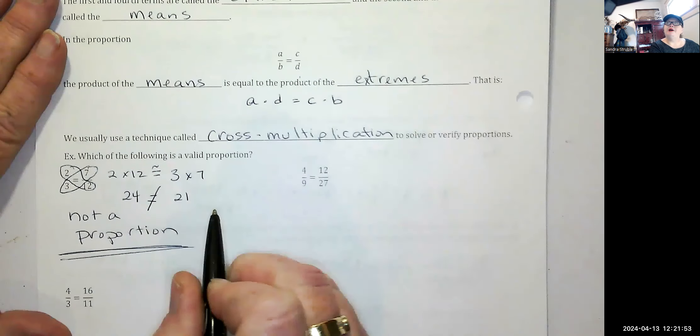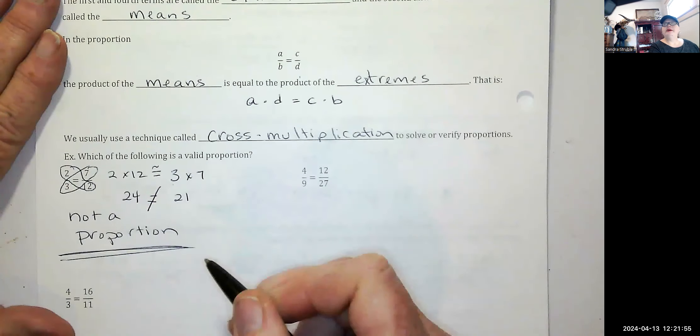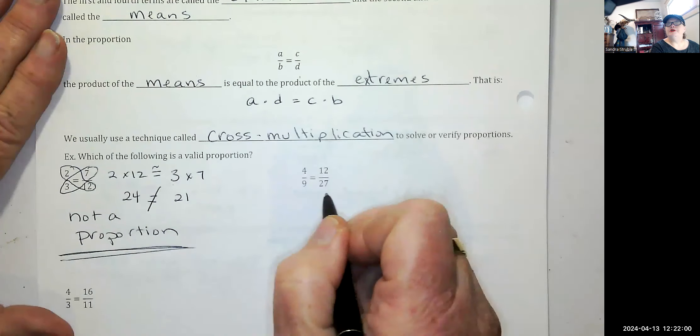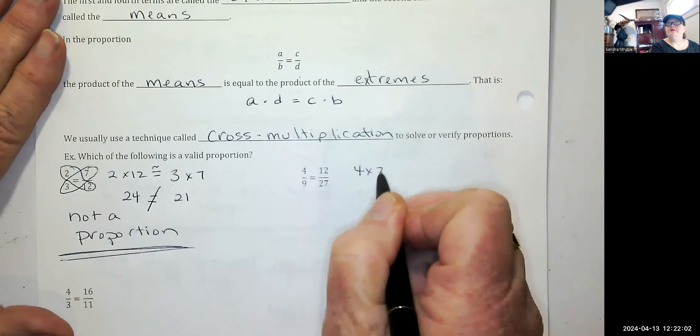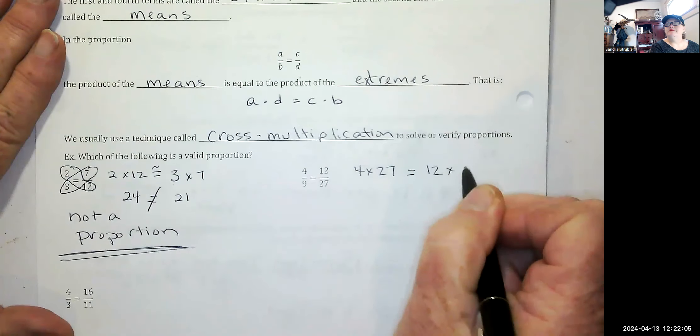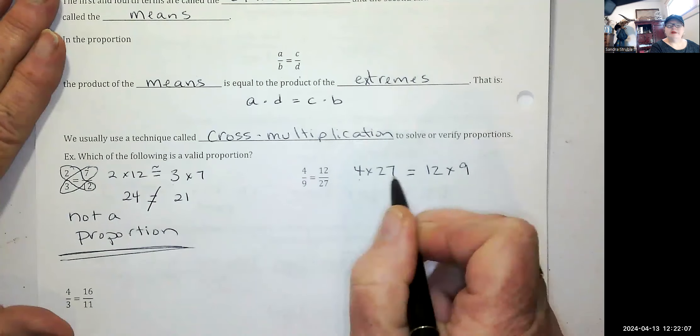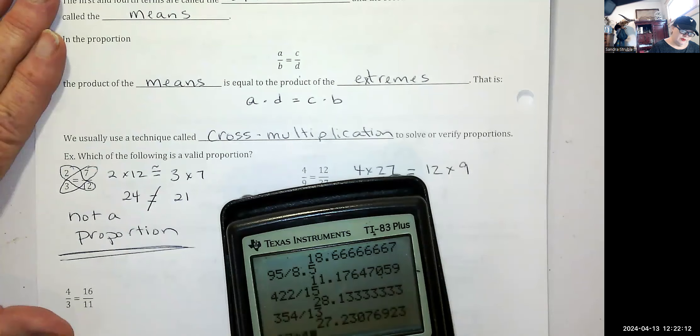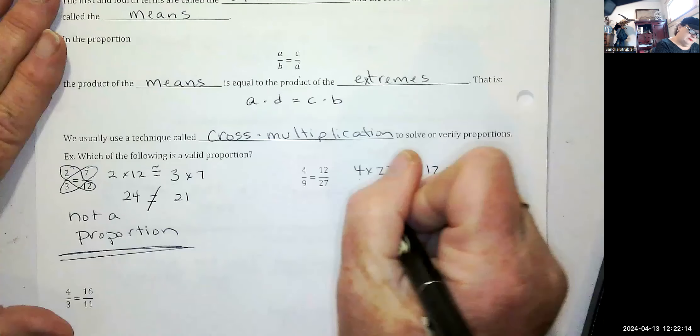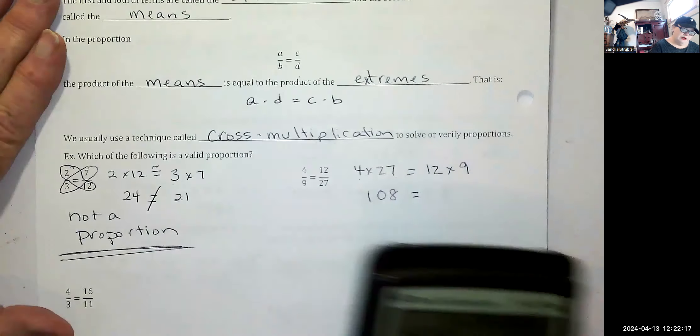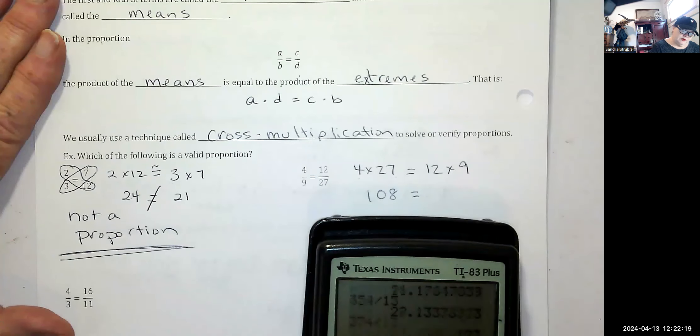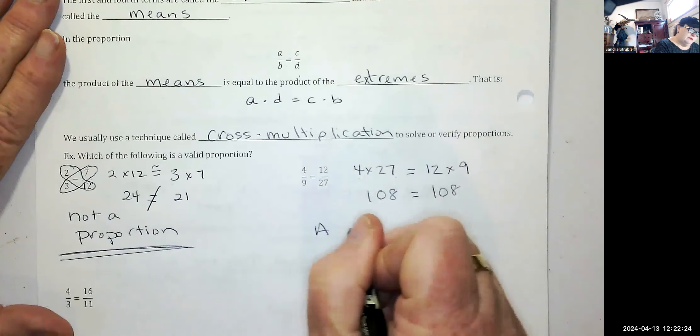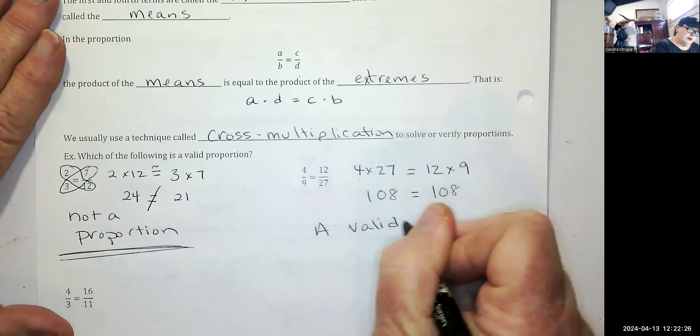Let's do, you try this one. Pause the video and attempt this one yourself. I'm going to check the proportion four times 27 to see if it's equal to 12 times nine. Four times 27 is 108. Is that equal to 12 times nine? 108. Yes it is. So therefore, this is a valid proportion.